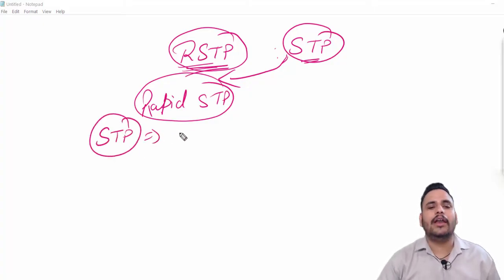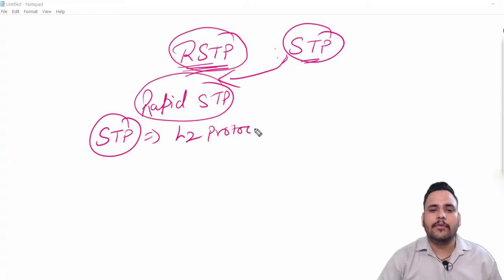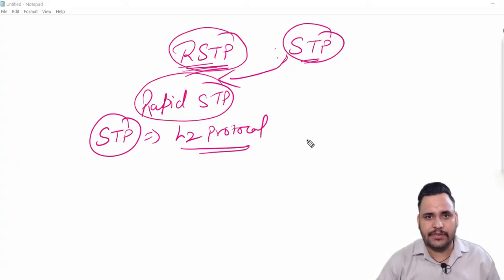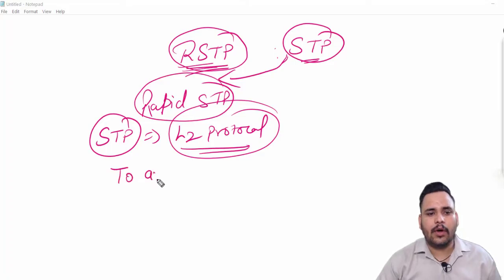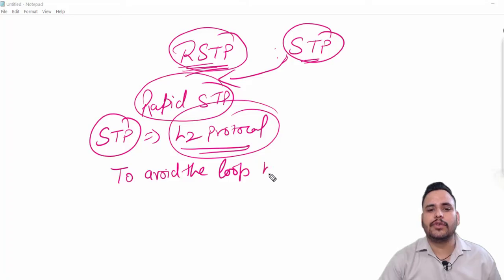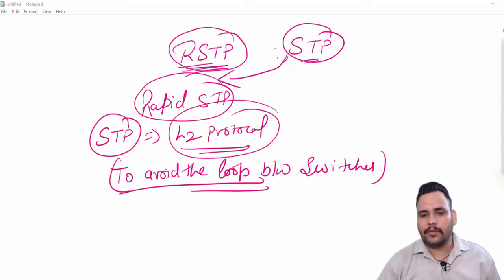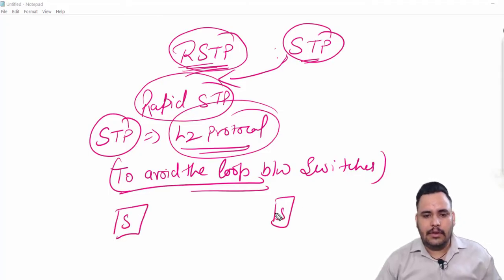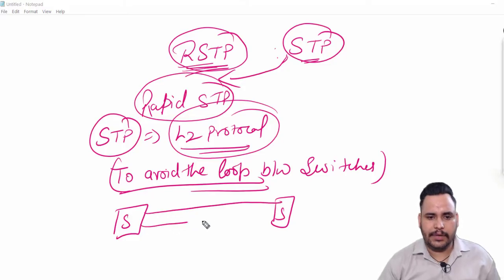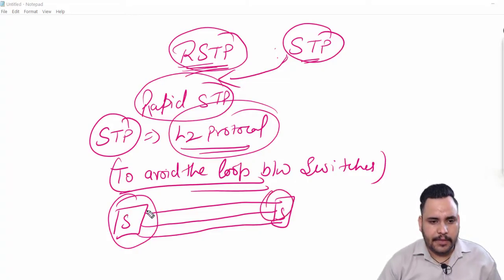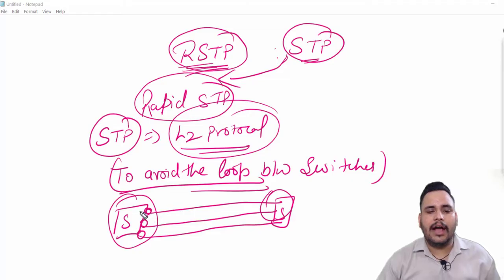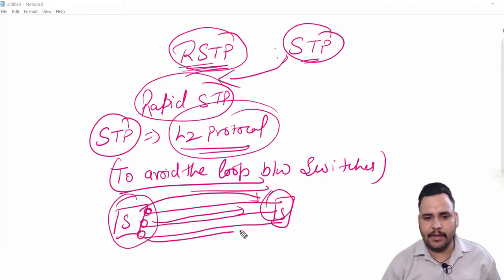First of all we need to understand what is STP. Spanning Tree Protocol is a Layer 2 protocol which is by default enabled between switches. The work of STP is to avoid the loop between switches. For example, we have two switches and we have some redundant links between switches.